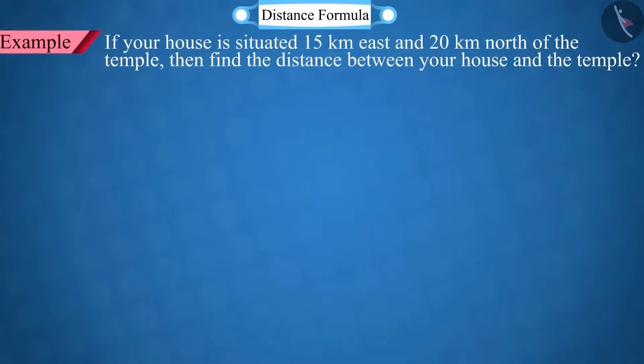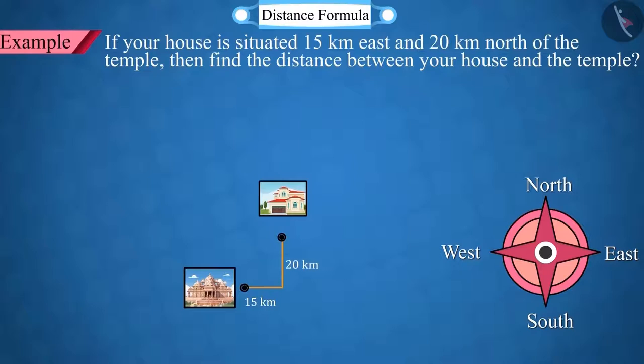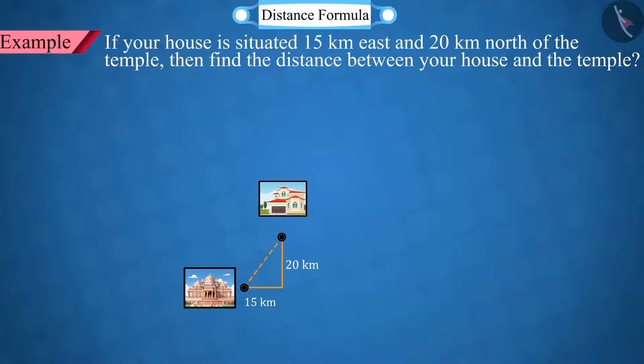If you are told that your house is located 15 km east and 20 km north from the temple, then can you find the distance from the temple to the house?